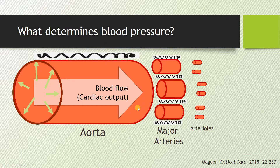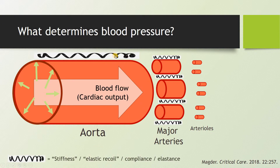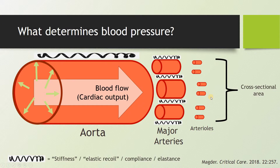The next determinant is the amount of stiffness or recoil or compliance in the vascular wall. If it's stiffer, it'll have a higher pressure; if it's more compliant, it'll have a lower pressure. The final major determinant is the cross-sectional area of the distal arterioles. This is what raises blood pressure when you vasoconstrict in those small arteriolar beds, and it's why blood pressure is preserved until late stages of hemorrhagic shock — you're both mobilizing blood on the venous side and vasoconstricting to limit arteriolar beds.